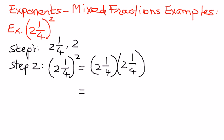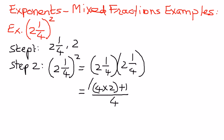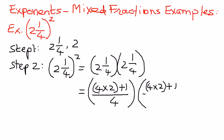We take the denominator of the fraction and multiply it to the number on the side, take the product of that, and then add it to the number on the numerator, like this: 4 times 2 plus 1, divided by 4. We keep this whole thing in parentheses, and we do the same thing for the second mixed fraction: 4 times 2 plus 1, divided by 4.